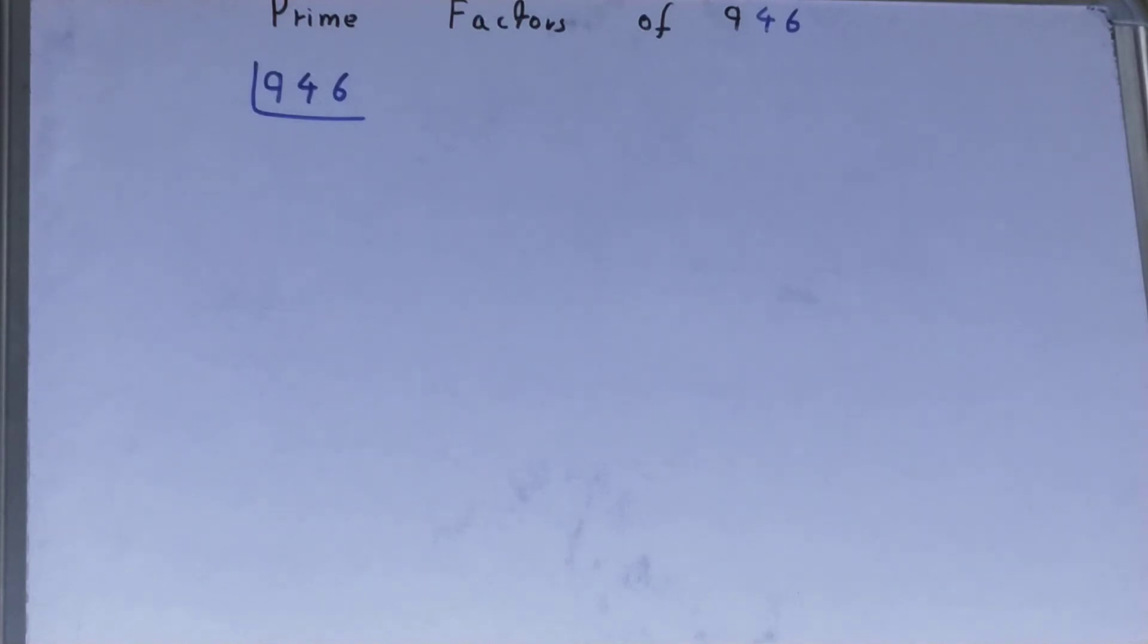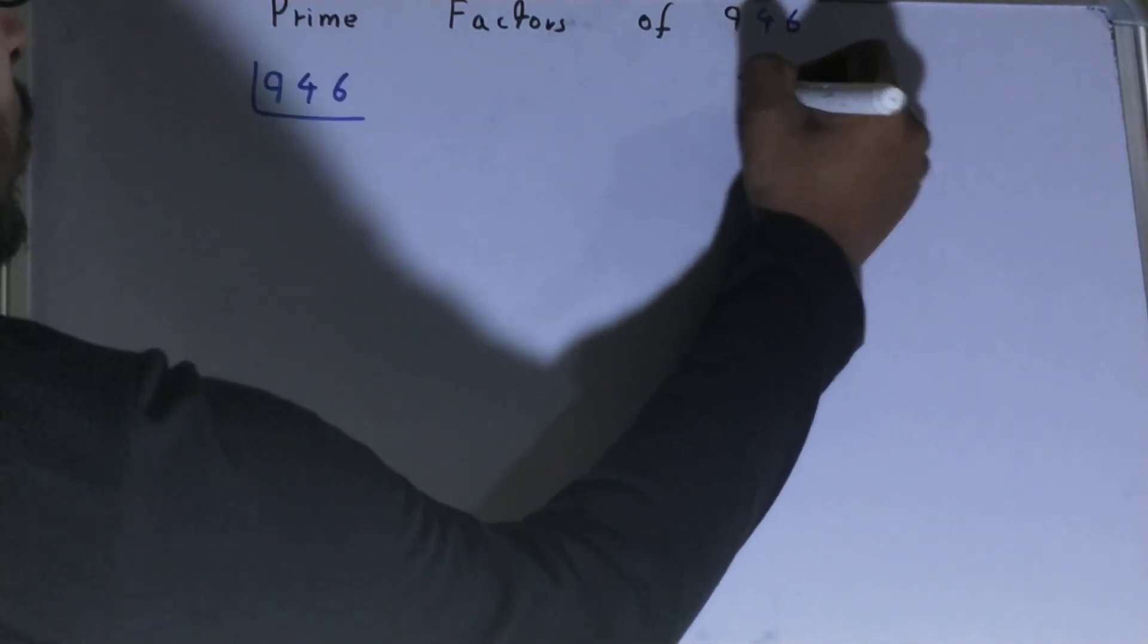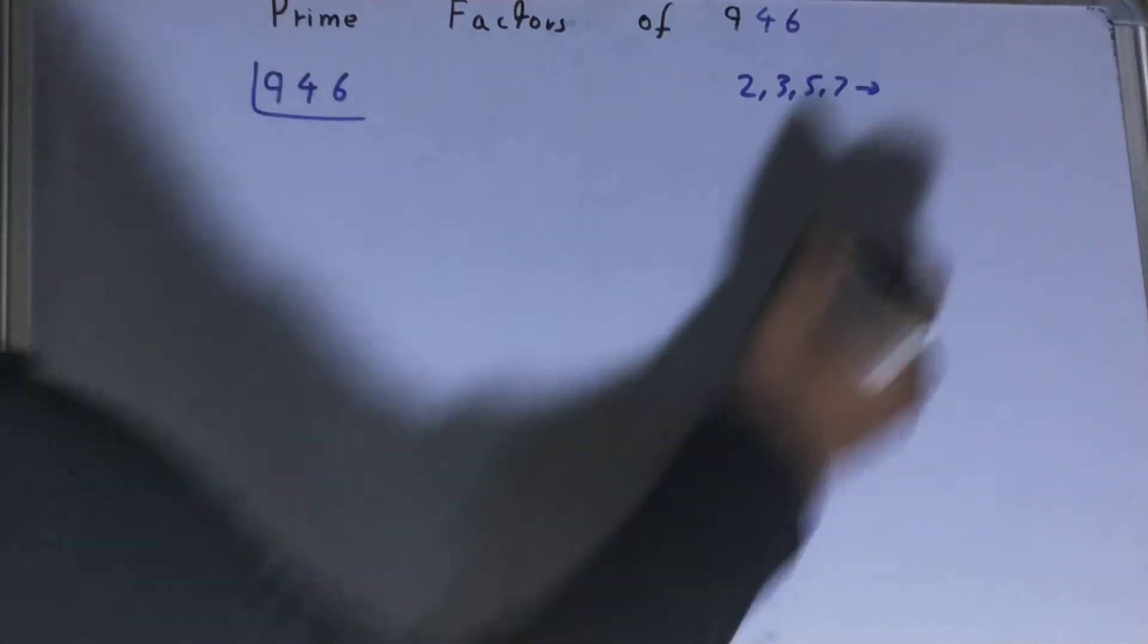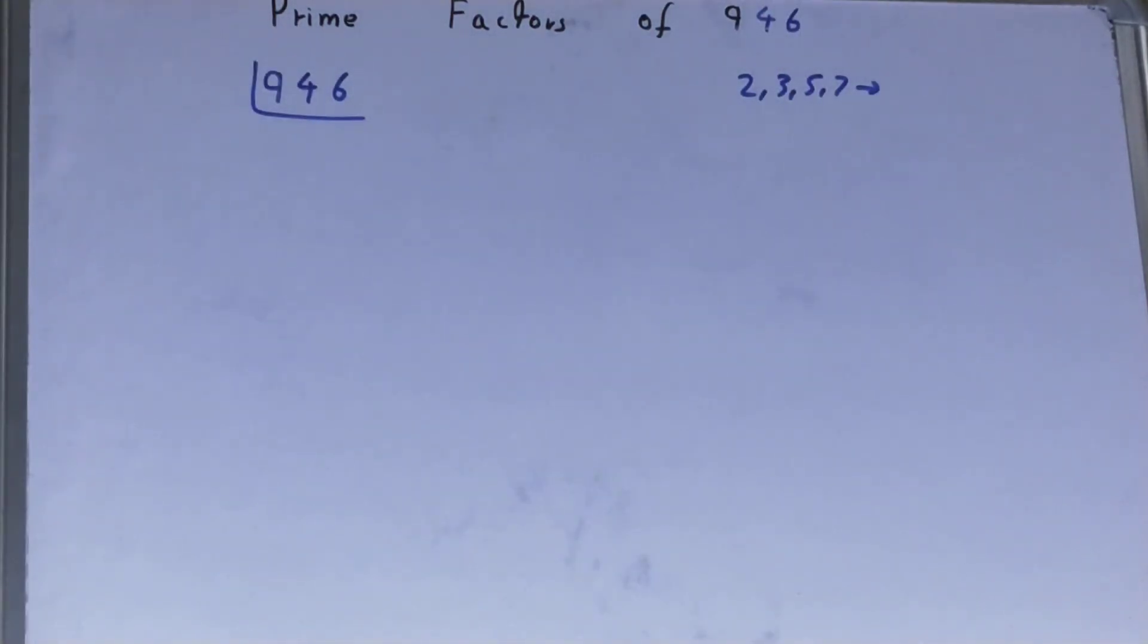So your prime numbers are numbers that are divisible by 1 and the number itself, like 2, 3, 5, 7 and so on. We will be starting with the lowest prime number we have, that is 2.